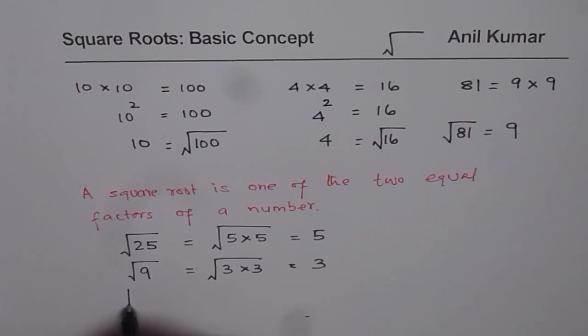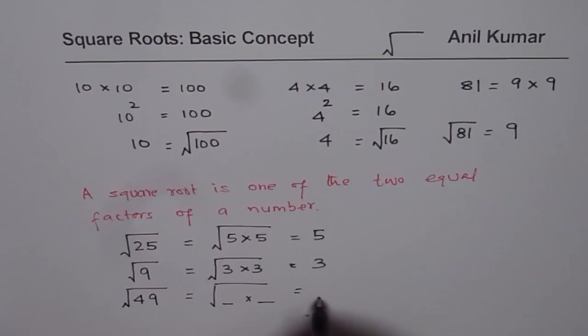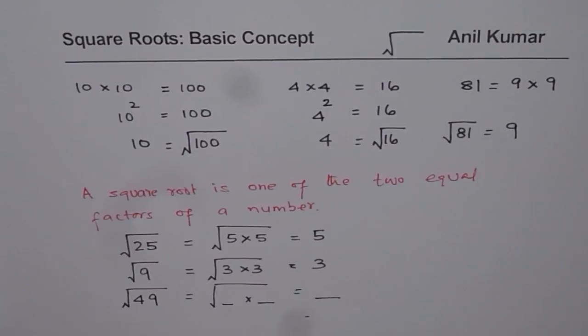So here is a test question for you. What is square root of 49? So you need to figure out two numbers, same numbers, which when multiplied will give you 49 and one of them will be taken as the square root of 49. So likewise, you can do such questions.